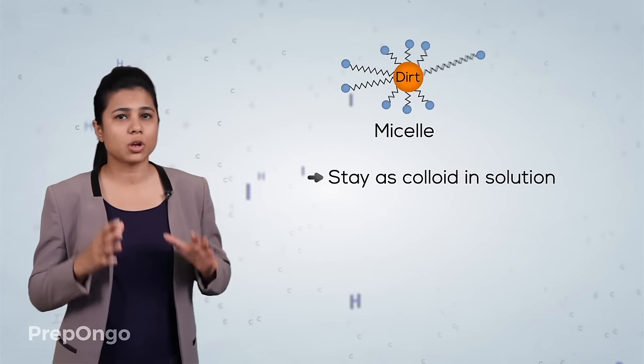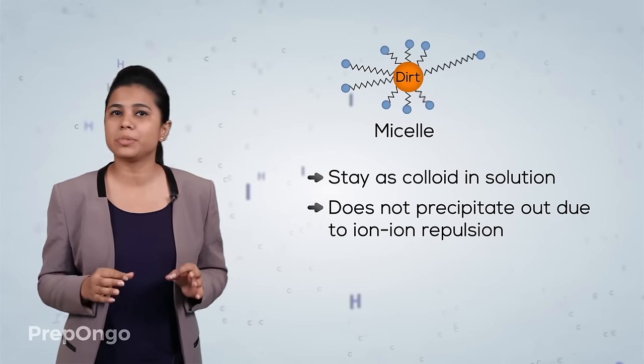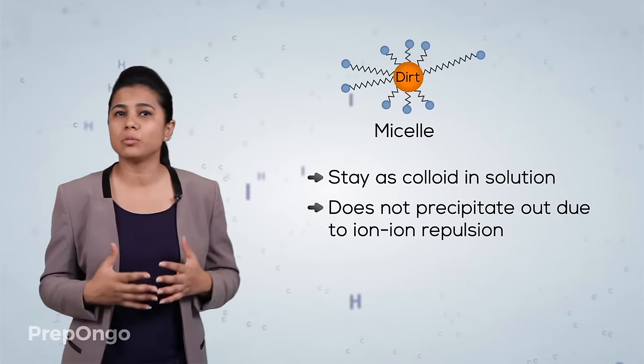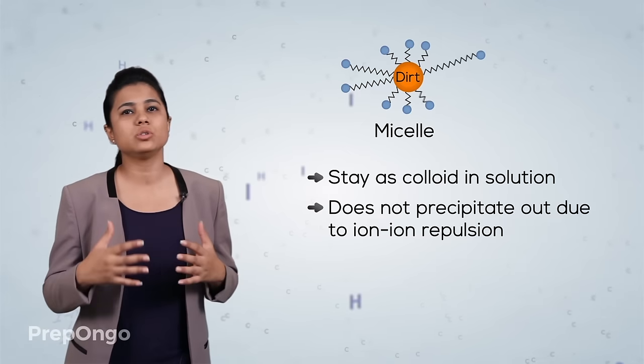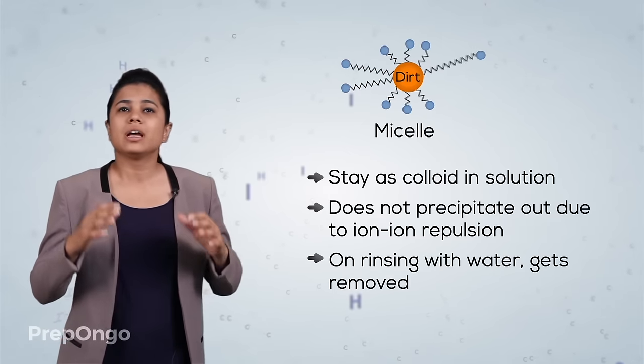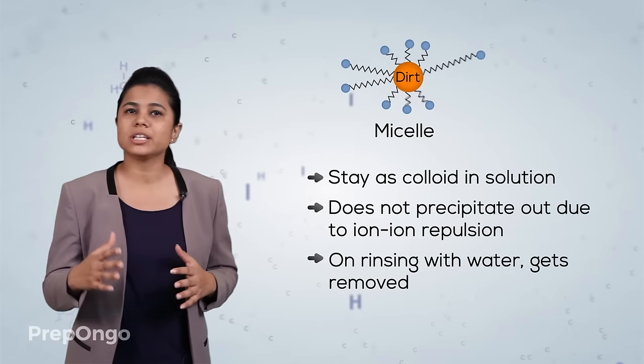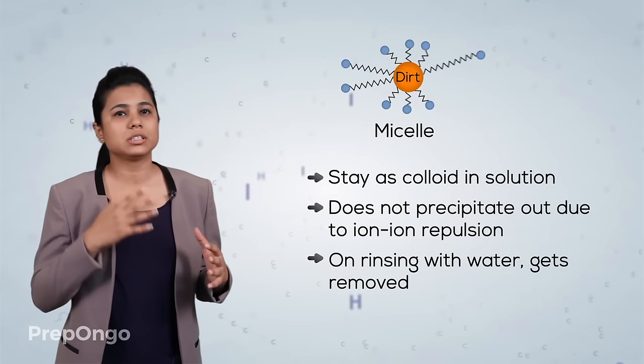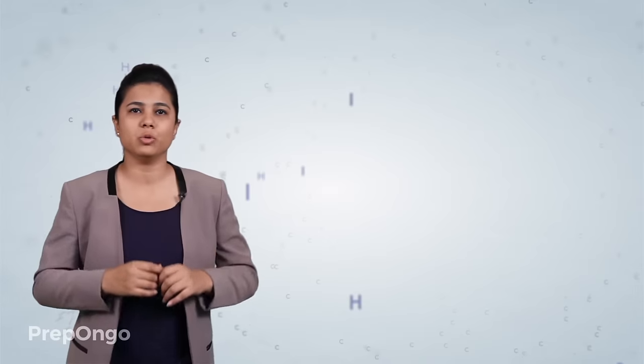The micelles stay in solution as colloid and do not precipitate out, that means they do not form insoluble salts due to ion-ion repulsion. That is why on rinsing the clothes with water the stains along with the micelles get removed.